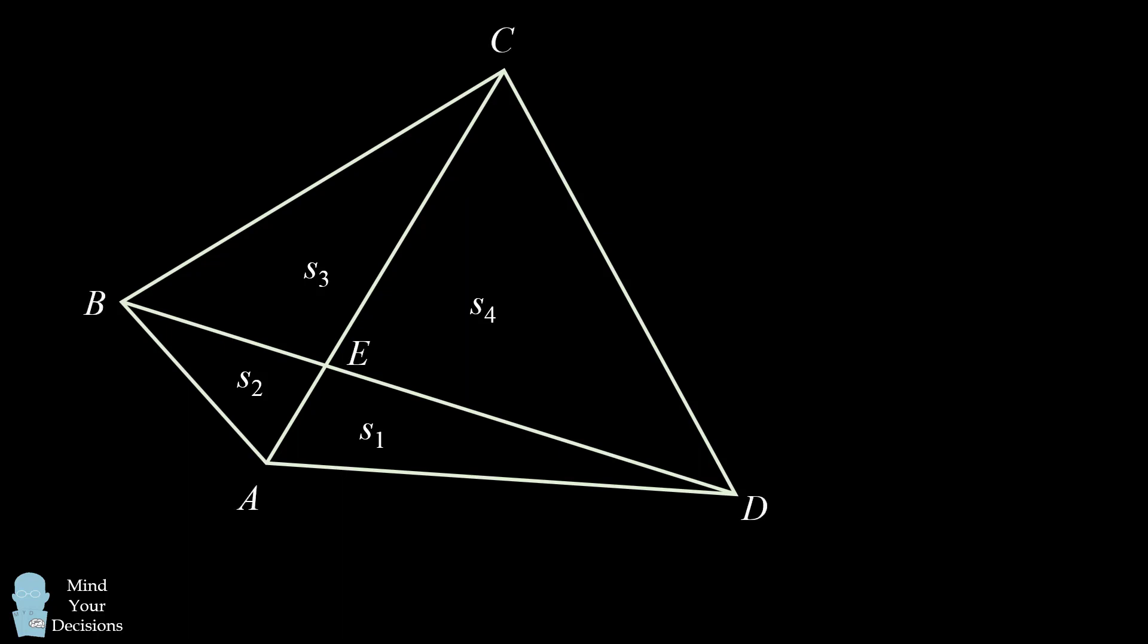I'll label the vertices of the quadrilateral as A, B, C, and D, and I'll mark the point at which the diagonals meet as E. In order to write formulas for each of these areas, we will draw altitudes from vertices A and C to diagonal BD.